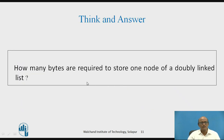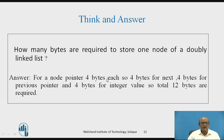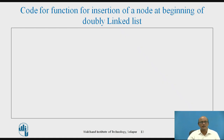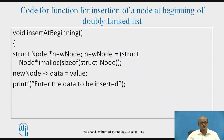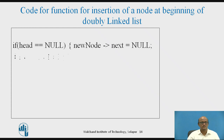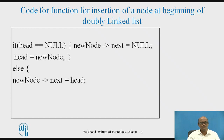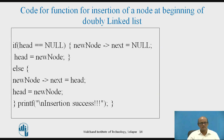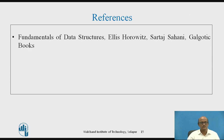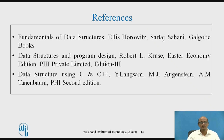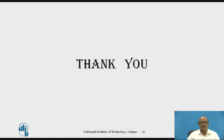Take a pause here: how many bytes are required to store one node of a doubly linked list? We require 12 bytes — 4 bytes for the integer and 4 bytes for each of the two pointers. This is the entire code of a doubly linked list. I hope you understood how to insert a node at the beginning of a doubly linked list. Thank you.